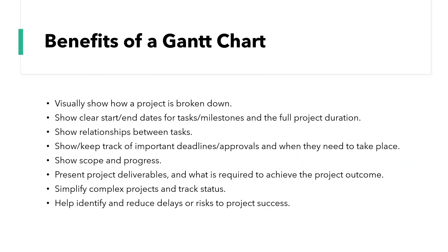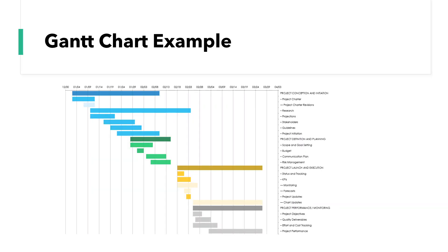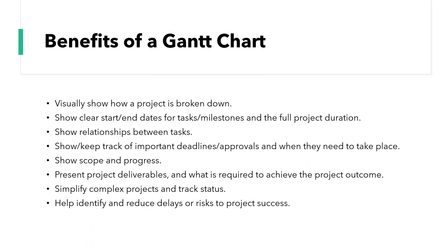So what are the benefits of a Gantt chart? Well they help to visually show how a project is broken down. They show a clear start and end dates for certain tasks and even show when milestones are due to take place, and they can plot the whole project duration as well. They show the relationships between tasks and keep track of important deadlines and approvals. Gantt charts also show the scope and the progress. They present project deliverables and what is required to achieve the project outcome, showing all of the tasks and activities required. They help to simplify complex projects, track statuses, and identify and reduce delays or risks to project success. It's essentially a map of the project.